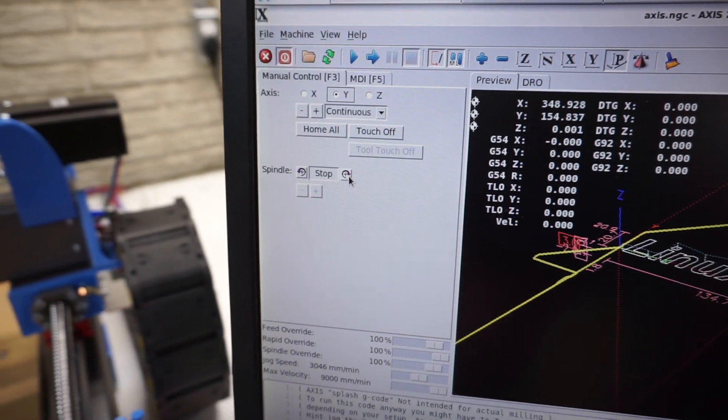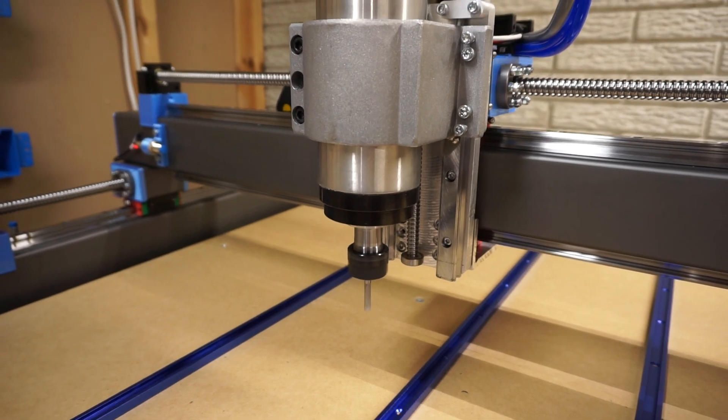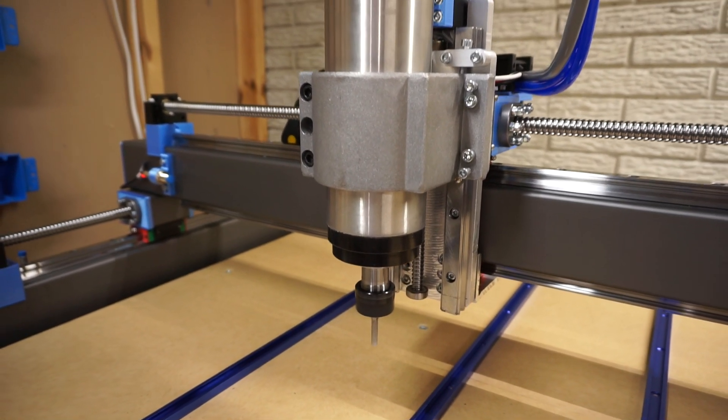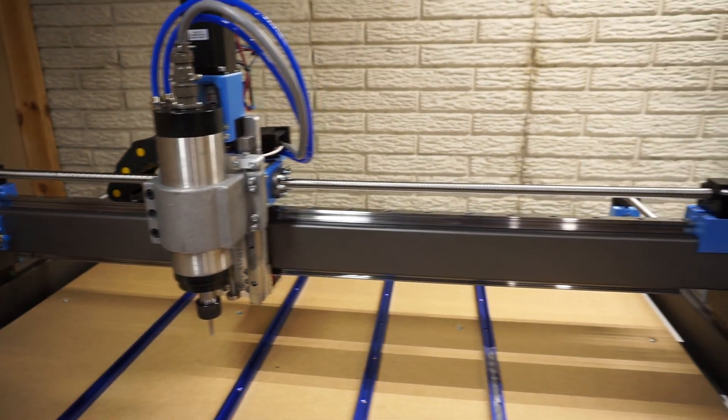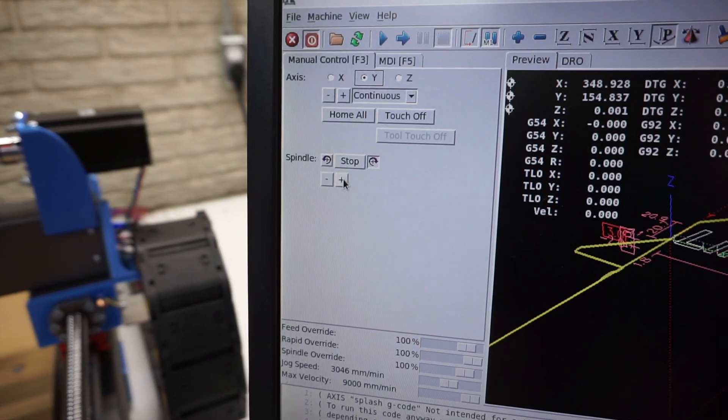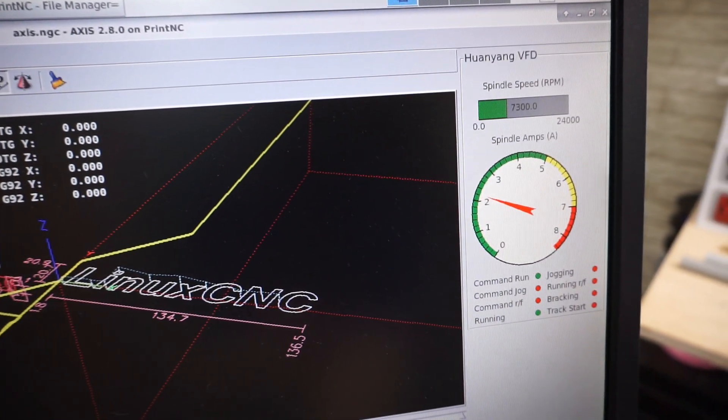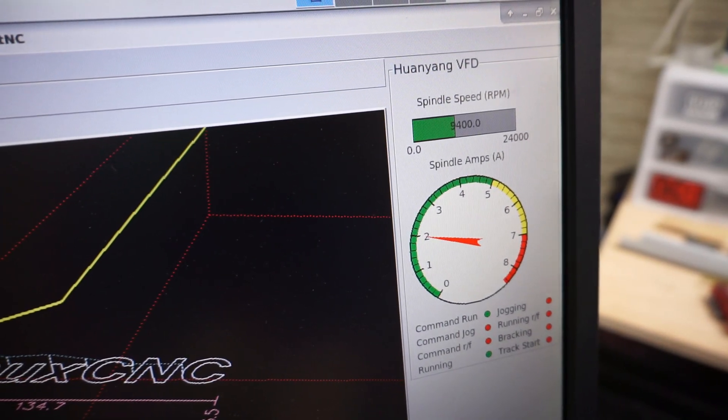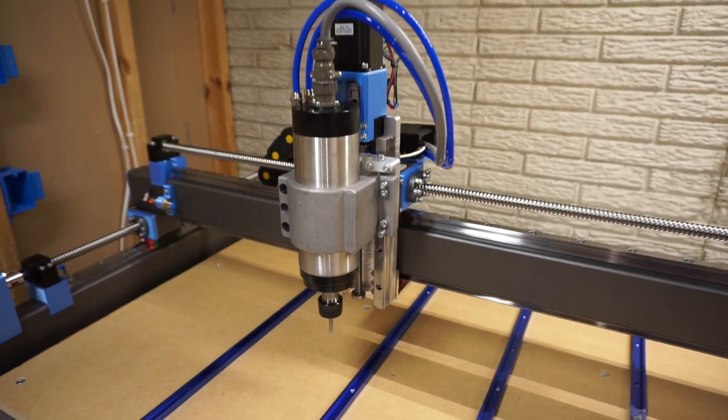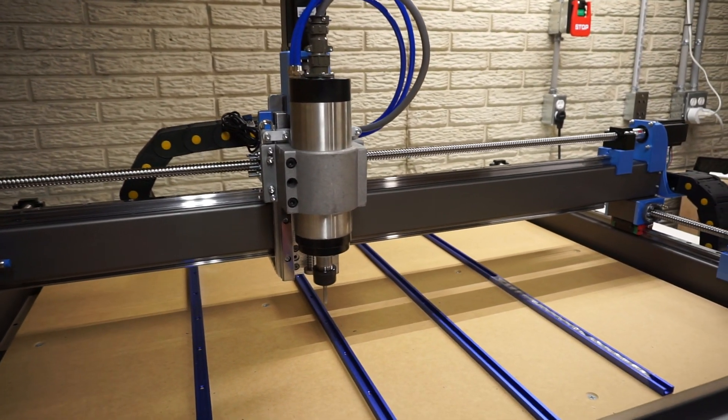I'll show you the spindle control here. Here's our spindle start. Very quiet. Very very quiet compared to like a Dewalt router or something. That's nice to hear. And then I've got speed controls here as well. And then you can see the graph as well as I turn it up. You guys get the idea. You know pretty easy to talk over.